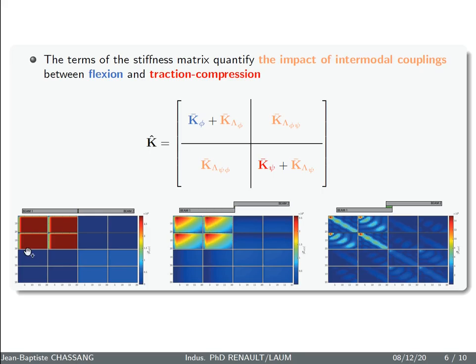So if you take some example of representation of the complex stiffness matrix, you start with a face-to-face configuration. You have only term in the first quarter and the last quarter.